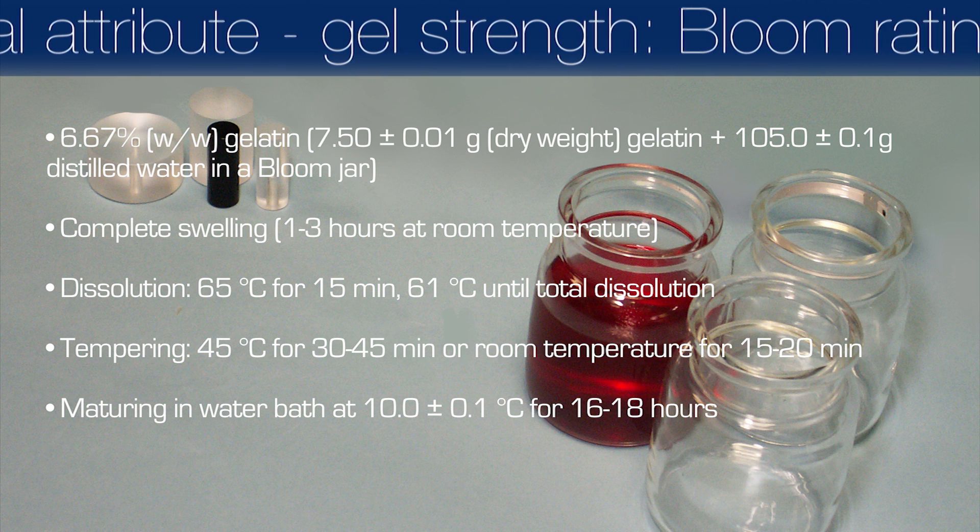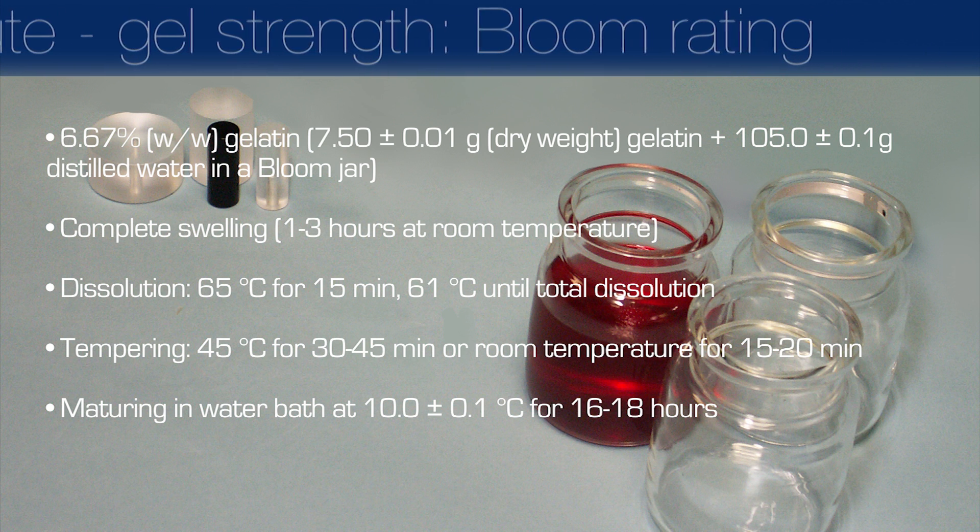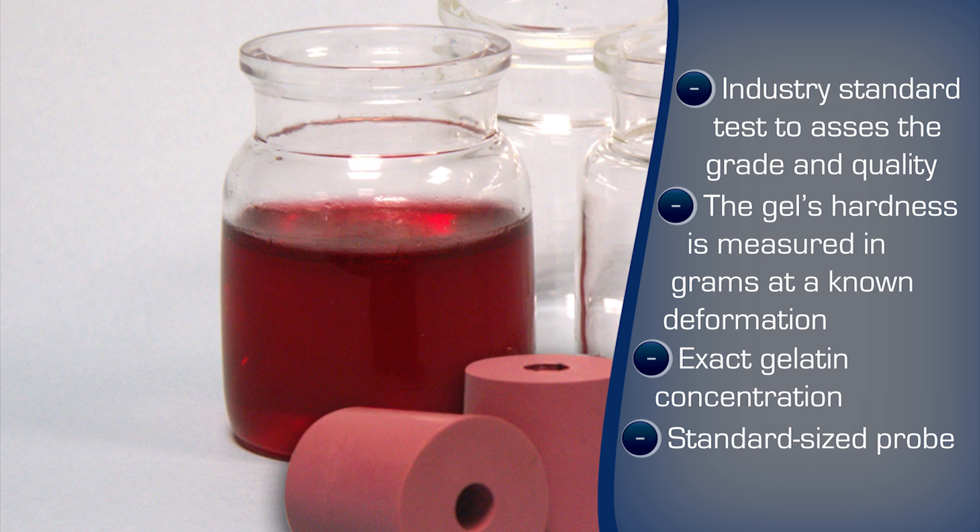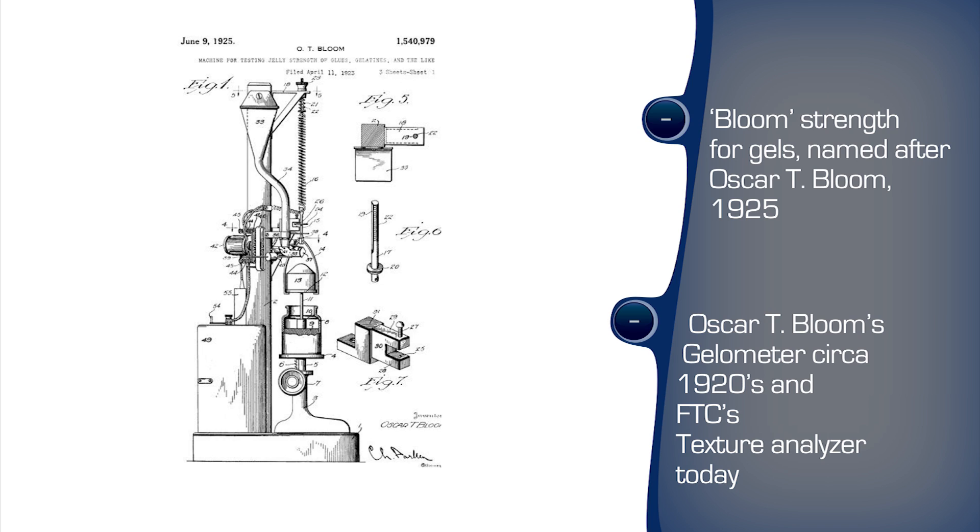An exact method of gel analysis is performed. A specific preparation procedure is followed, including particular equipment. The measured result, bloom strength, is named after Oscar Bloom, who patented the process and used a purpose-built machine called the Gelometer.